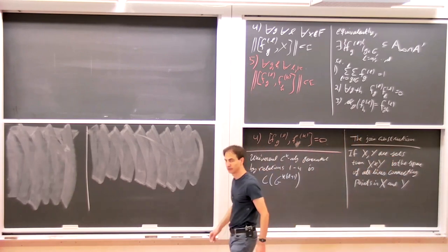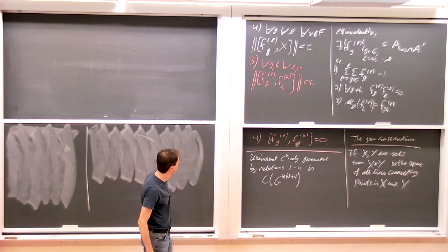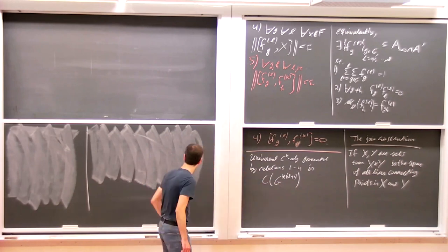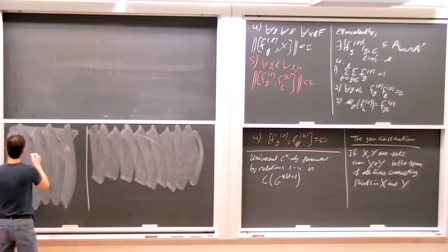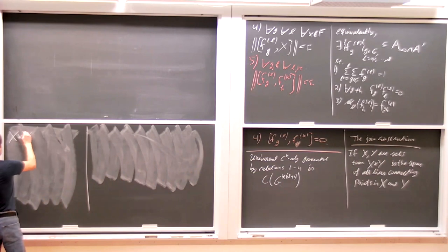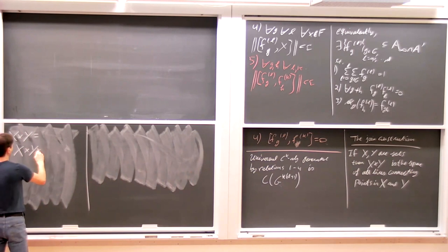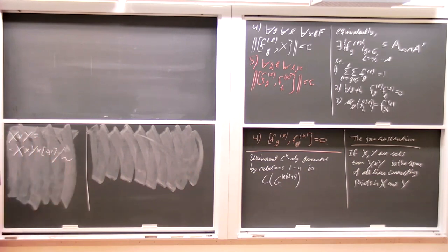What is the join construction? For two topological spaces X and Y, the join is the space of all lines connecting X and Y — formally, X cross Y cross [0,1] modulo an equivalence relation. For example, taking X to be two red points and Y to be two white points, we connect every point in X to every point in Y with a line, giving a graph. For Z/2 joined with itself, taking two points on each side, we connect them and get a circle. Joining the circle again with Z/2 gives a sphere. In general, taking Z/2 joined d+1 times gives the d-dimensional sphere.